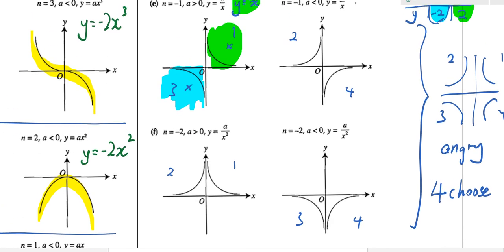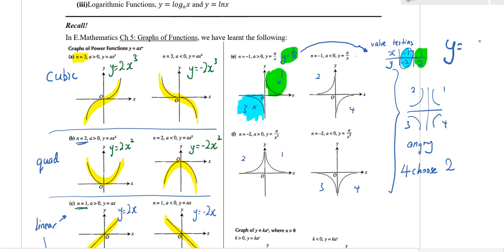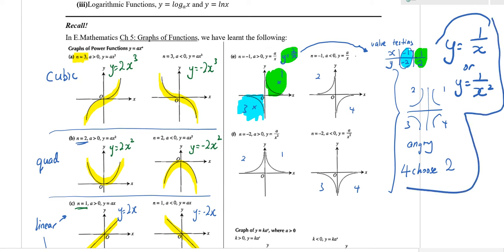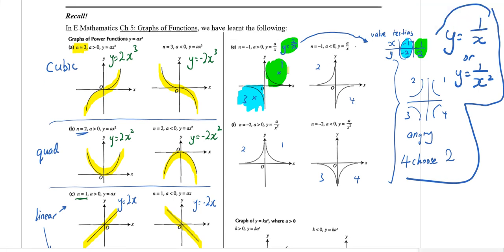By repeating value testing four times, you can plot all four graphs without memorizing which shape is which. Whenever you have y equals one over x, or y equals one over x squared — this family is called the angry graph. If x cubed is cubic, then x to the power negative one or negative two is the angry graph. For angry graphs: four quadrants, choose two, and use value testing to decide which. It's not possible to choose quadrants two and three together.